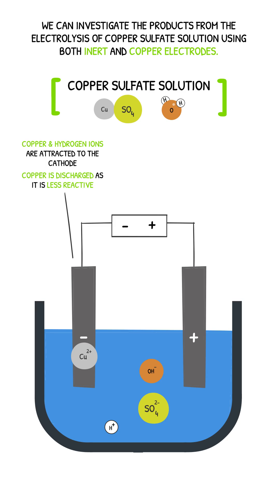Each copper ion is reduced, gaining two electrons to form copper atoms. This formation of copper metal is confirmed as the cathode changes to a brownish colour.